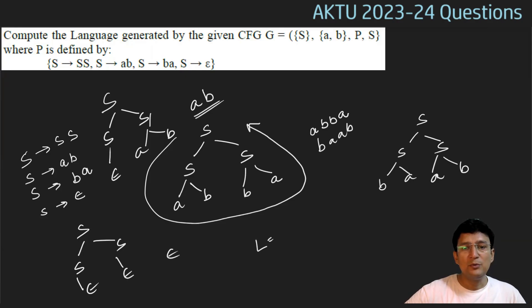So, the language contains these strings: epsilon, AB, ABBA, BAAB, and so on and so forth. It's an infinite language generator. It means number of A is equal to number of B.